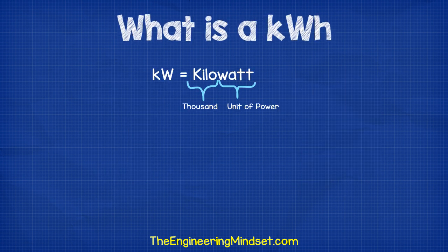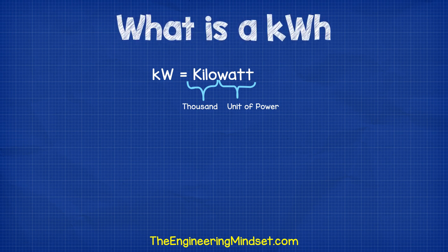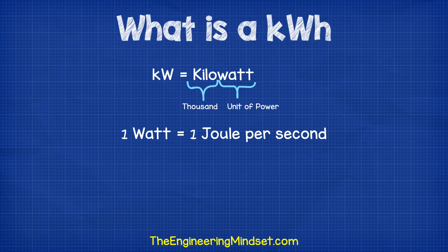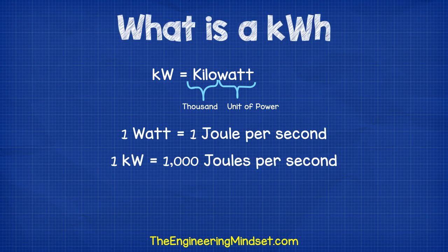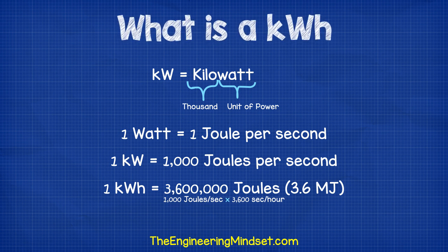Kilo means 1,000, and watt is a rate of power named after the engineer called James Watt. To be precise, a watt means 1 joule per second, and a kilowatt hour equals 3.6 megajoules.